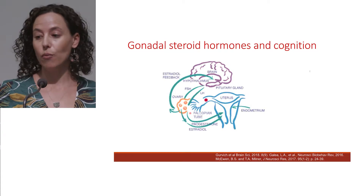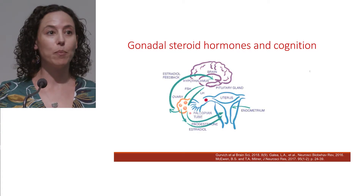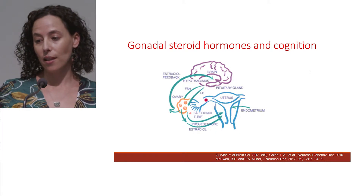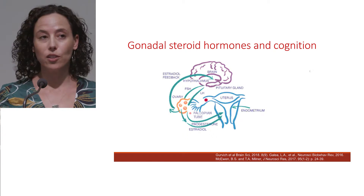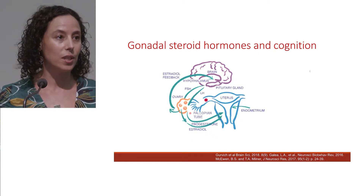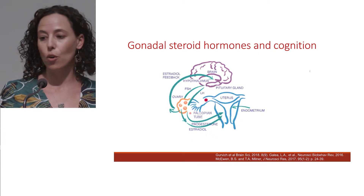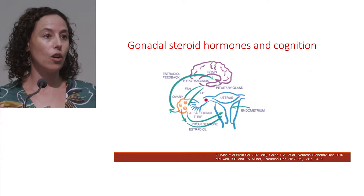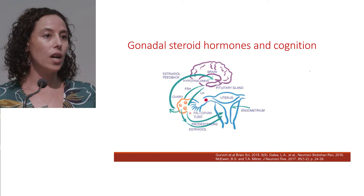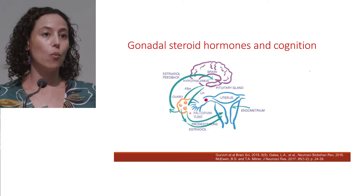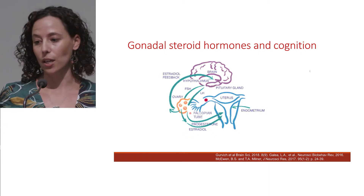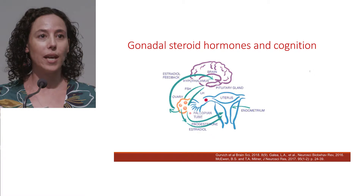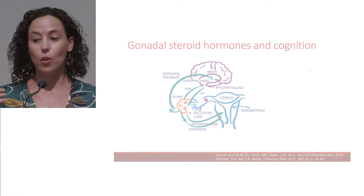Sex hormones are regulated by the hypothalamic pituitary gonadal, or HPG, axis and this negative feedback loop regulates hormones such as oestrogen, progesterone, follicle stimulating hormone, and luteinising hormone. Most of the research that's been conducted on hormones has been conducted on oestradiol, which is the main form of oestrogen that circulates in women who are of a reproductive age, and most of this research has come from animal models.